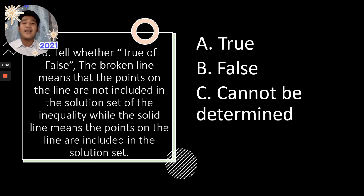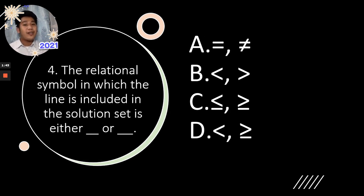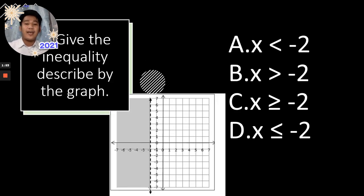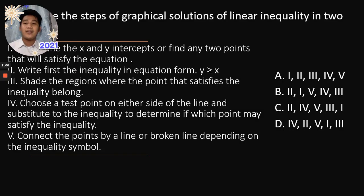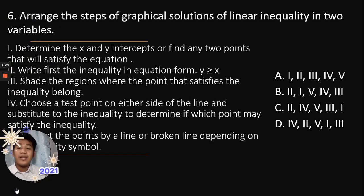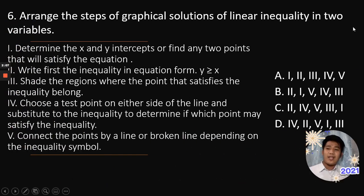You will learn that, and you can tell whether it is true or false that the broken line means the points on the line are included in the solution set of the inequality, while the solid line means the points on the line are included in the solution set. Another thing we can learn is that the relation symbol in which the line is included in the solution set is either blank or blank. And you can give the inequality described by the graph given.